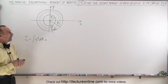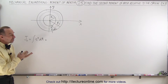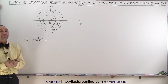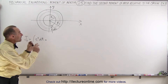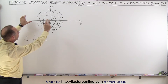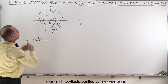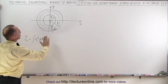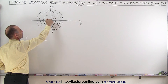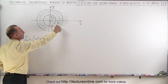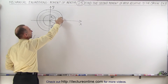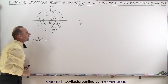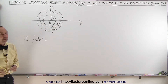Welcome to Electron Line. In this example we're going to find the second moment of area of what we call an annulus — a washer — something that has area starting from a radius from the origin to r1 and ending at r2. For this area right here we're going to try to find the second moment of area.